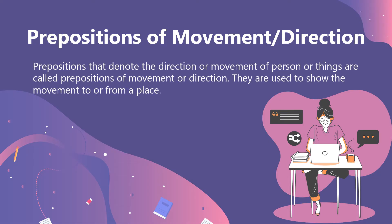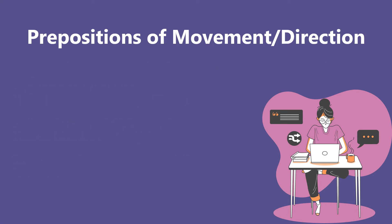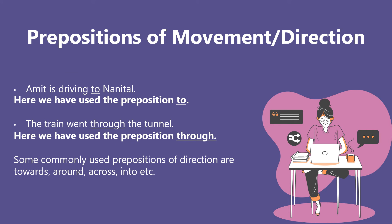Prepositions of movement or direction. Prepositions that denote the direction or movement of persons or things are called prepositions of movement or direction. They are used to show the movement to or from a place. Examples: 'Amit is driving to Nainital.' Here we have used the preposition 'to'. 'The train went through the tunnel.' Here we have used the preposition 'through'. Some commonly used prepositions of direction are: towards, around, across, into, etc.